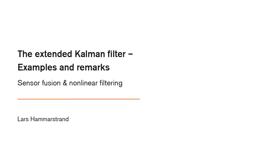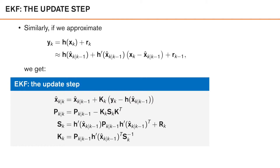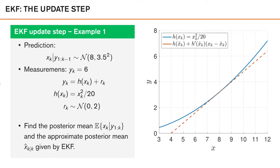We're now going to look at how good these approximations are in two examples of the update step in the extended Kalman filter. In the first example, we assume a predicted density of a scalar xk with mean 8 and standard deviation 3.5. We then get a scalar observation yk equal to 6, which is related to our state via a non-linear function h plus additive zero-mean noise rk with standard deviation 2, where h of xk is a quadratic function of our state.